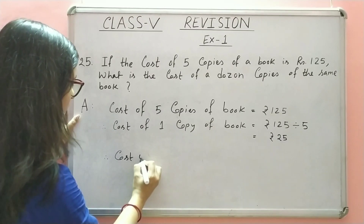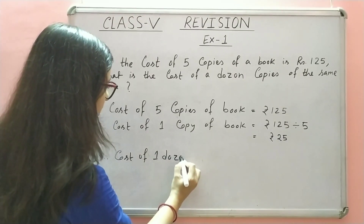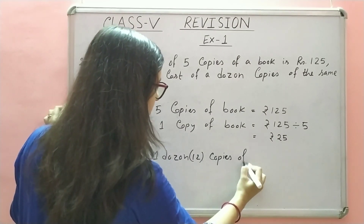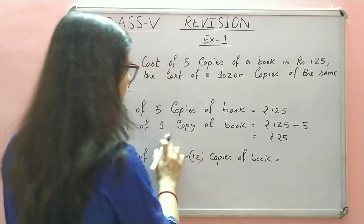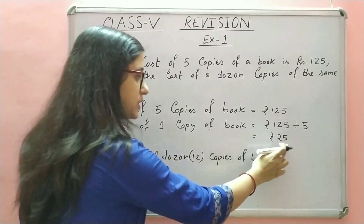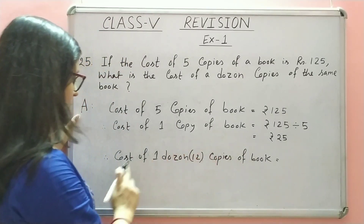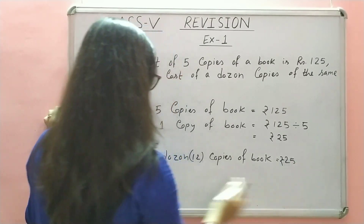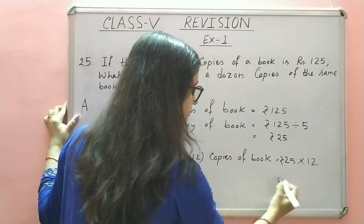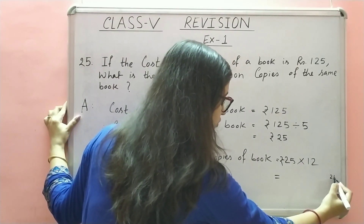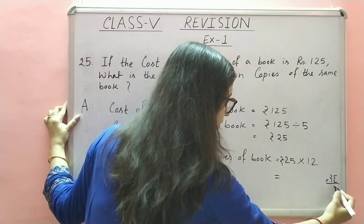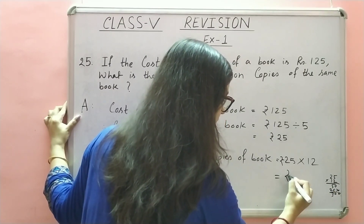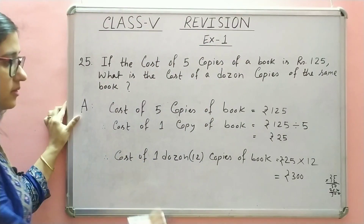Abhi hum nikalenge cost of 1 dozen copies of book. Cost of 1 dozen — 1 dozen means 12 — 12 copies of book. Toh kya ho jayega? 1 copy of book ka jo cost hai, Rs. 25 hai. So, 1 dozen copies of book ki cost kya hogi? 25 into 12. Rs. 25 multiply 12: 50, 25, so 300. Rupees 300.